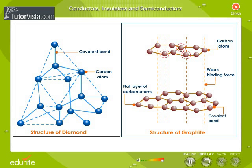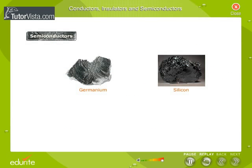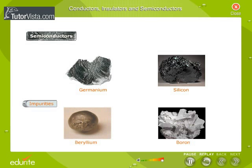These free electrons can easily flow when there is an electrical force. Semiconductors like Germanium and Silicon can be made to conduct electricity by adding impurities like Boron.